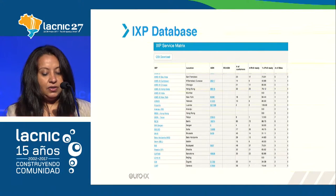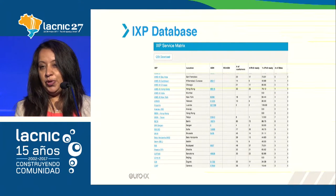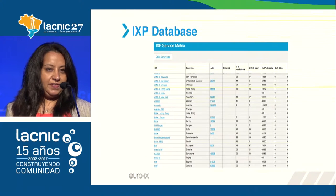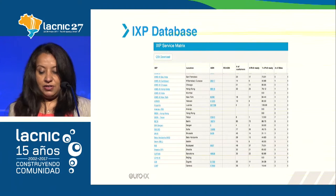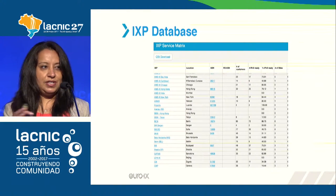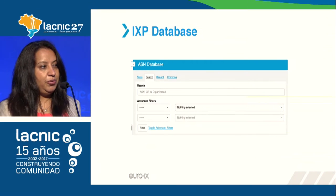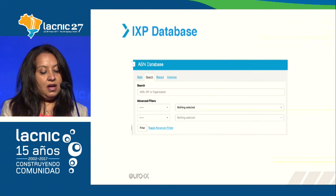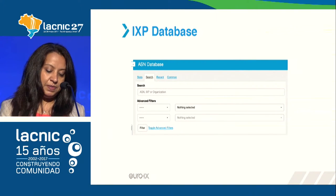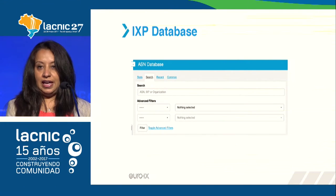We have a service matrix as well. You can see a very quick snapshot — if you are looking to join an internet exchange point and want to quickly see what services they offer, such as jumbo frames, IPv6, VLAN, out-of-hours assistance and so on, you can get a quick snapshot without logging in to every single IXP website. We've also improved our search facility, so you can search for ASNs, organizations, and IXPs, with advanced options available.